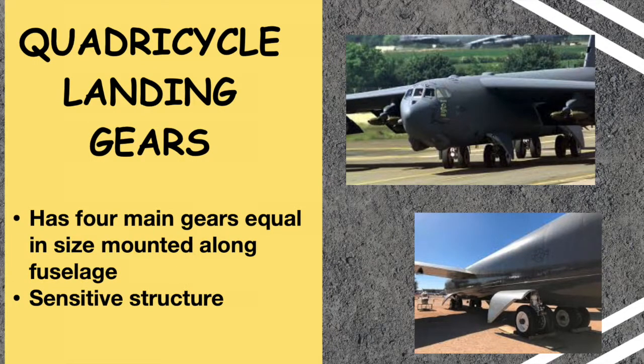Next is the quadricycle landing gear, which is also very similar to the bicycle landing gear, except there are four main gears roughly equal in size and mounted along the fuselage. The quadricycle landing gear often requires a very flat attitude during takeoff and landing, much like the bicycle landing gear. This structure is also very sensitive to the runway's roll, crosswinds, and proper alignment.